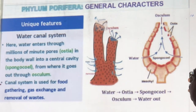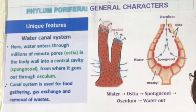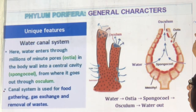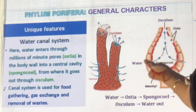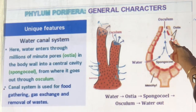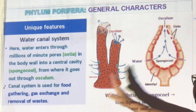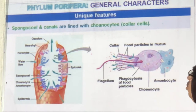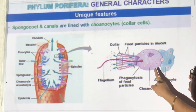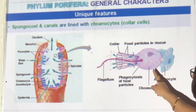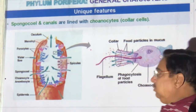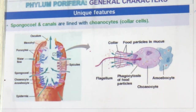The unique feature of sponges is the water canal system. Water enters through small holes in the body (ostia), goes into the cavity called the spongocoel, and comes out of the large opening (osculum). Food, oxygen, and waste transport — all three are handled by this water current. Choanocytes (collar cells) are present with flagella (whips) to capture food. These collar cells are unique to sponges.